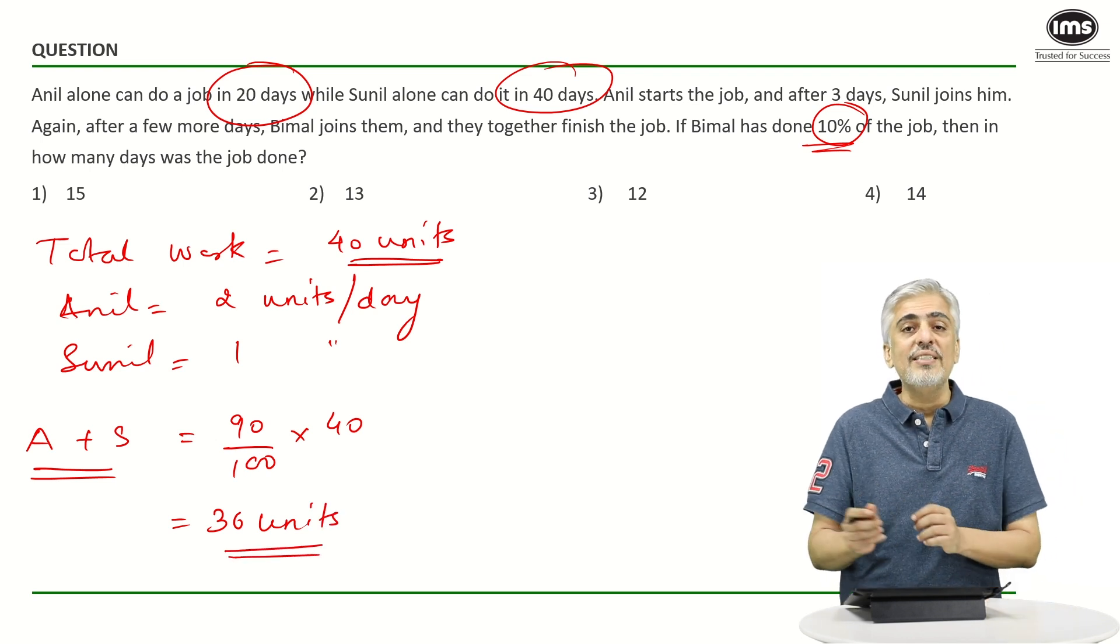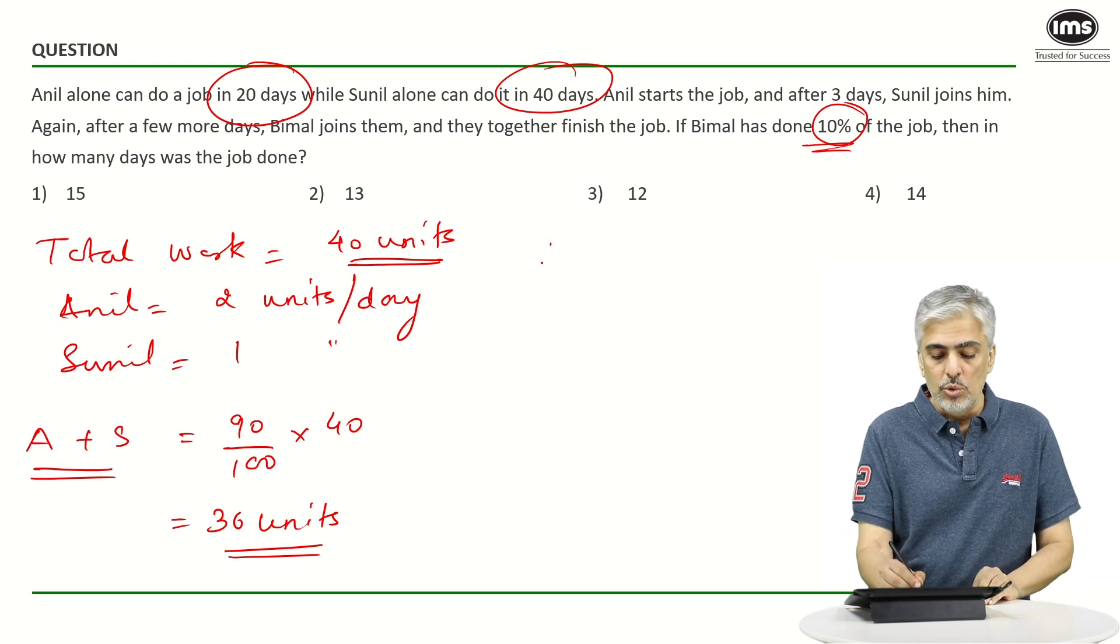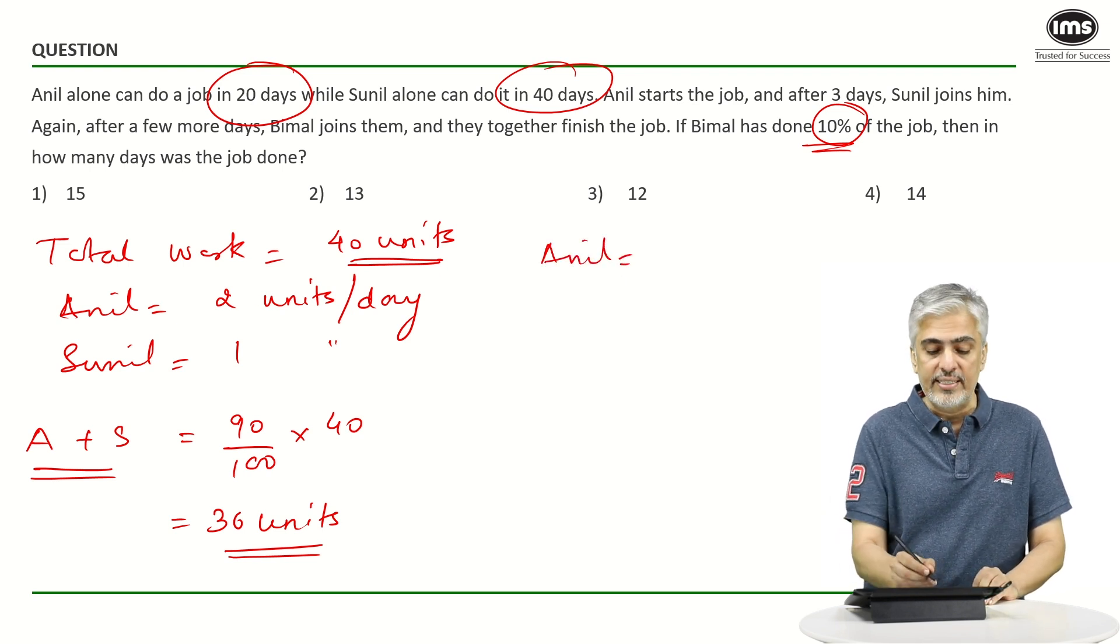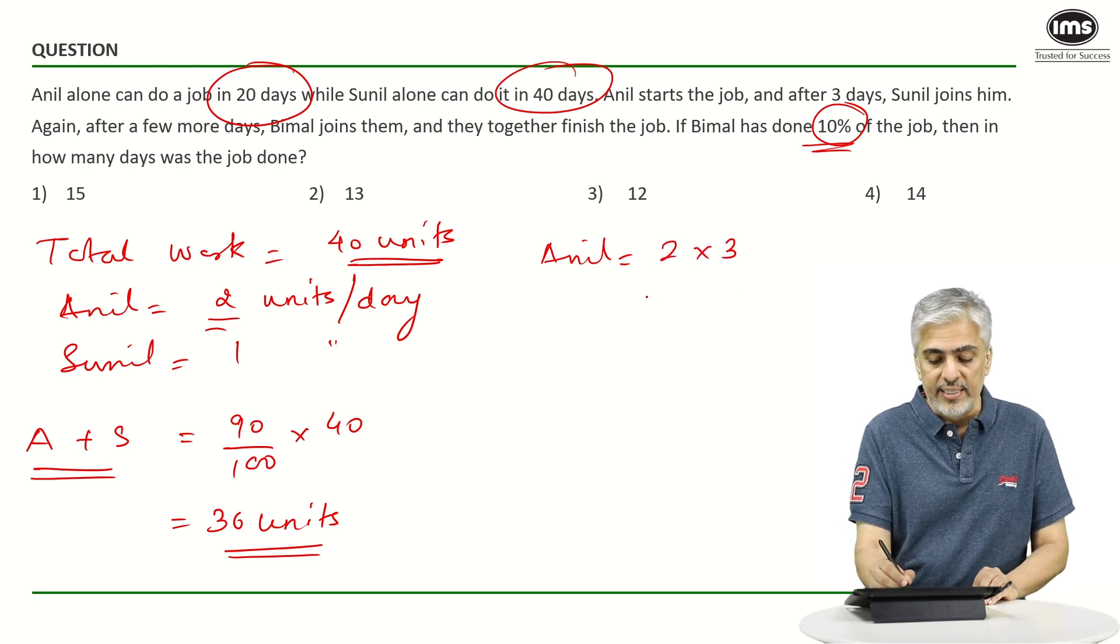Now out of this 36 units for the first three days Anil was working alone. So how much work does he do in three days? In one day he's doing 2 units. So in three days he'll do 2 times 3 or 6 units.